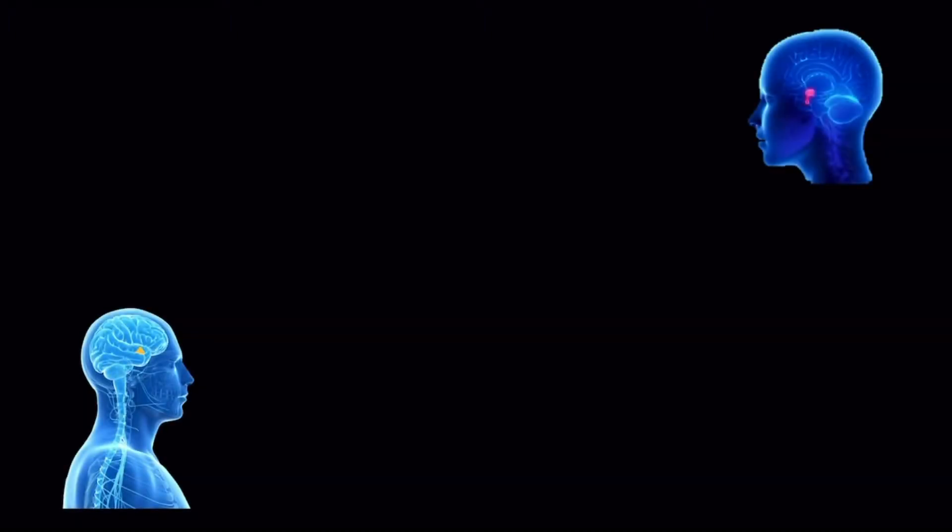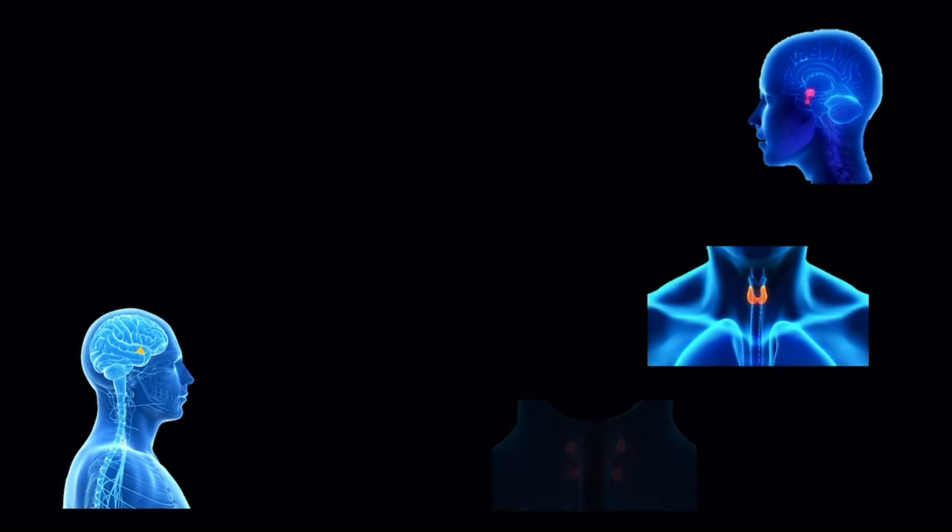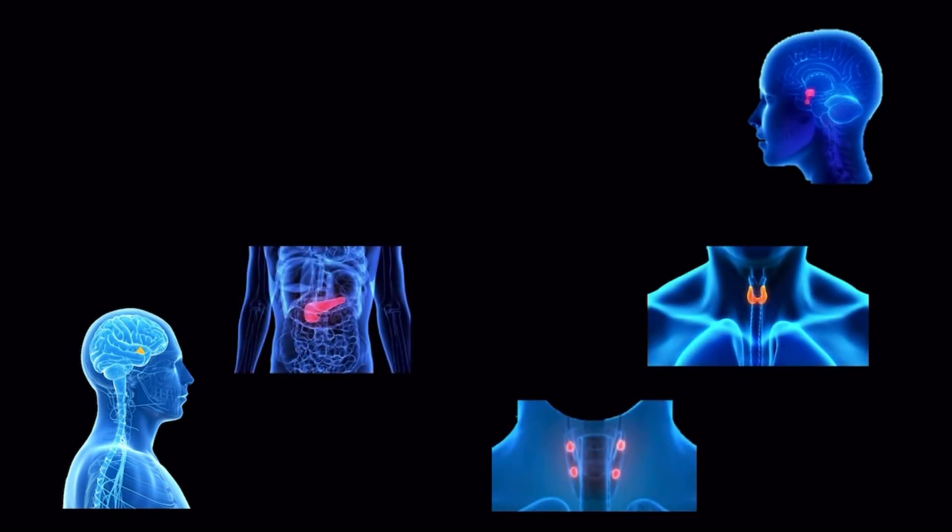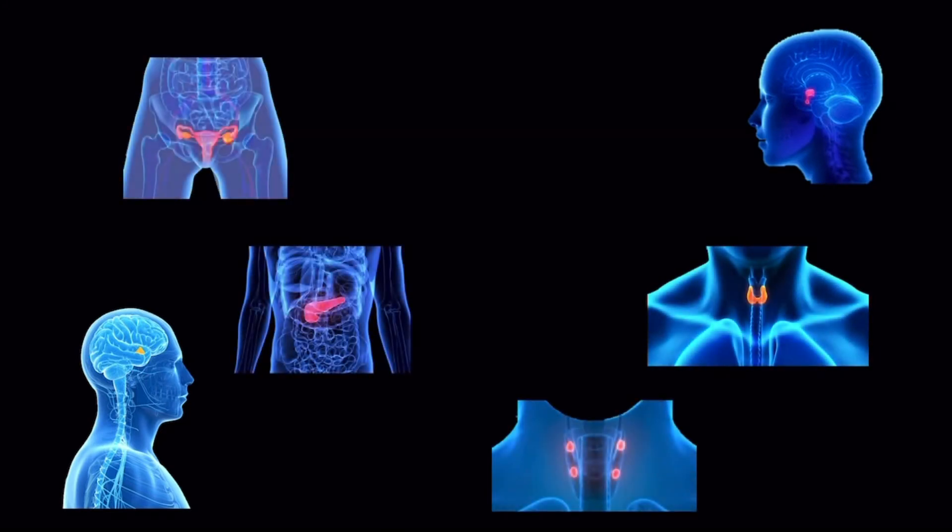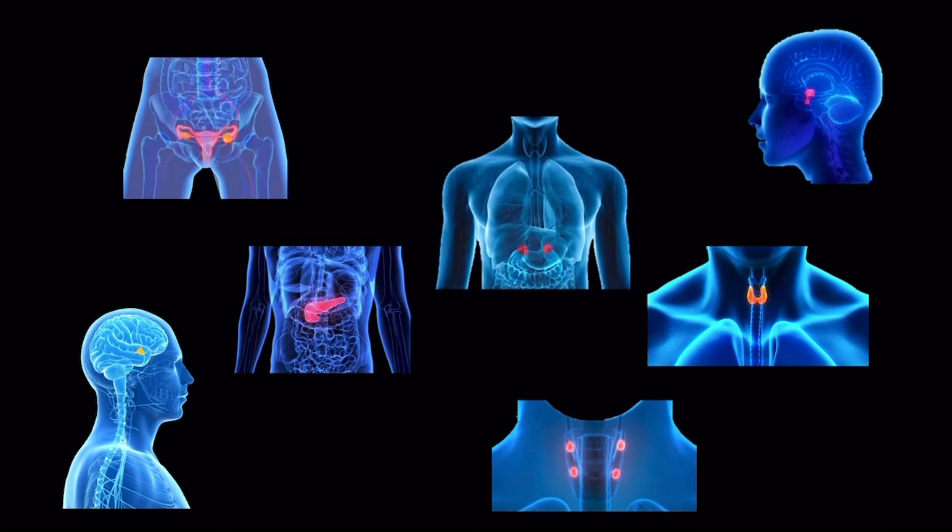The main hormone-producing structures in the body are the hypothalamus, pituitary gland, thyroid gland, parathyroid glands, pancreas, gonads, and adrenal glands. There are other structures in the body that also produce hormones, but I will hold off on listing them all here.